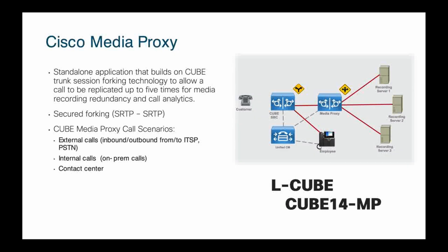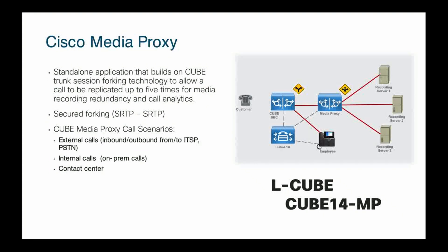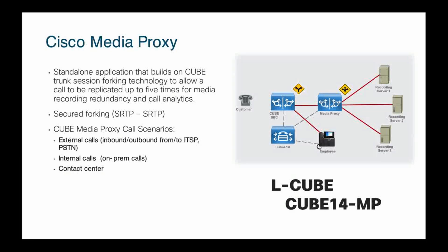Cube 14-MP is the media proxy license. This is used in a case where you may need call recording or need to fork an audio stream to multiple call recorders. You need a license per recording destination — wherever that call splits off, you need to license the media proxy as well.